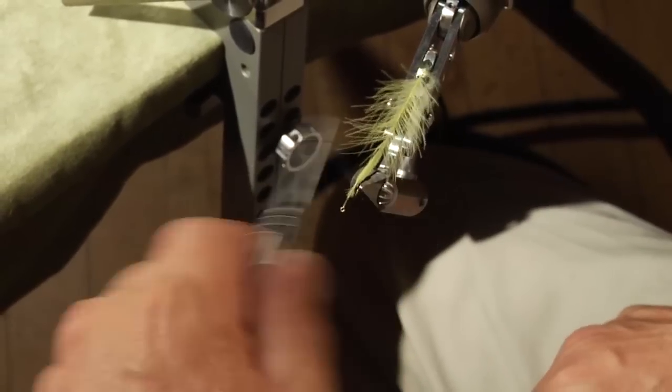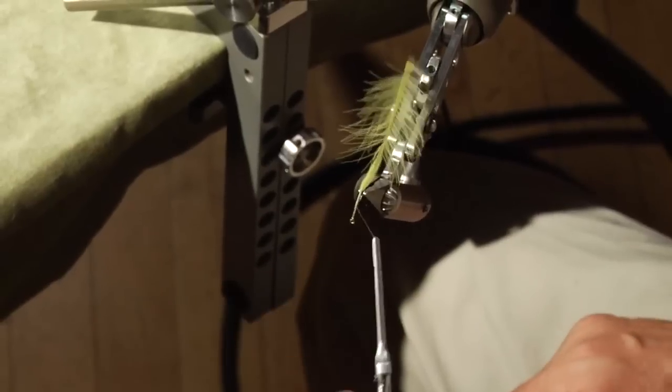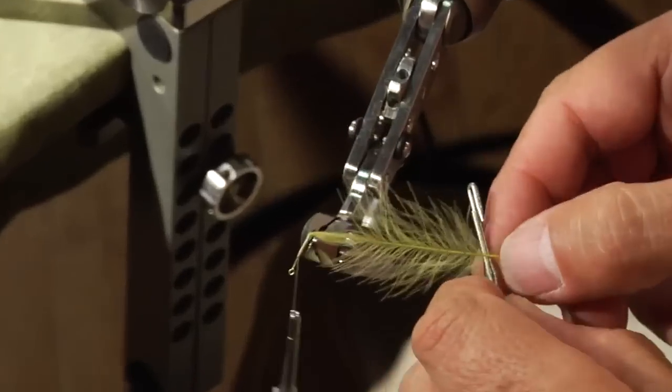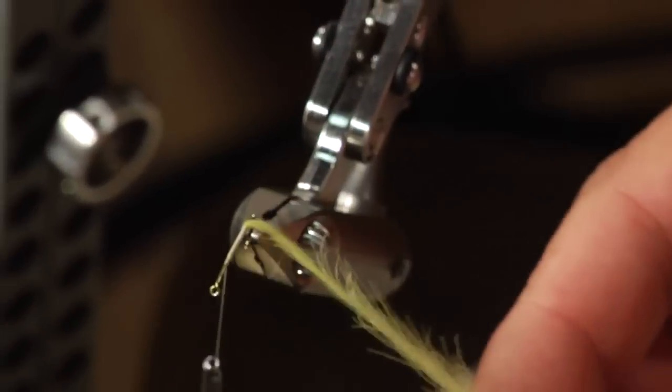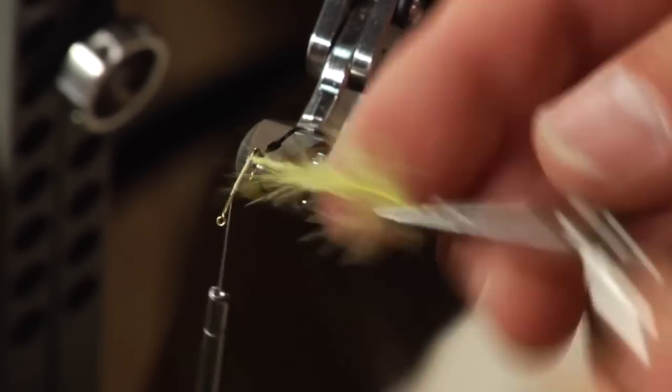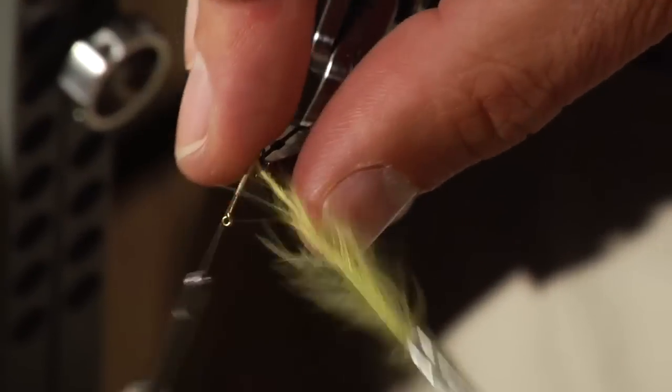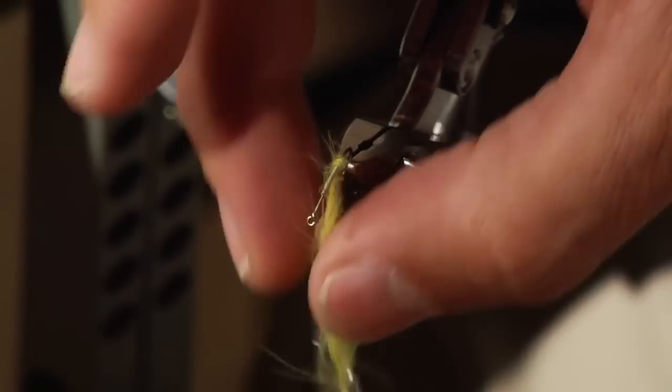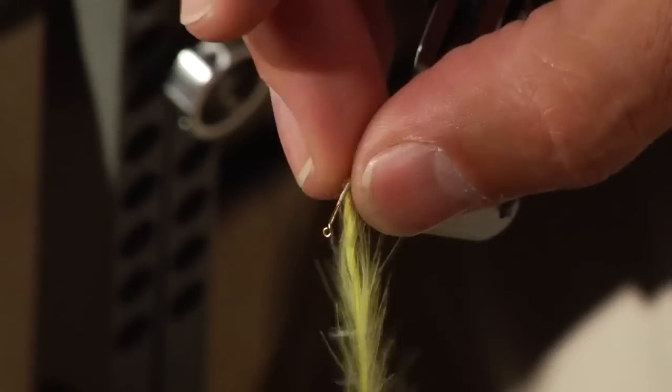And make a body using the plier that way. Grab the feather, trim the excess here, and then twist and wrap over the hook shank. And go a little bit further,